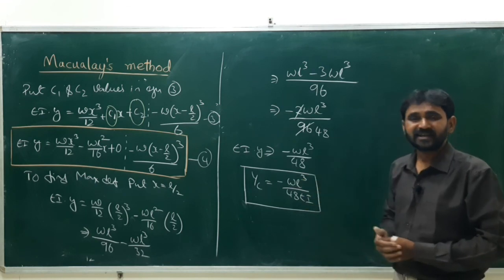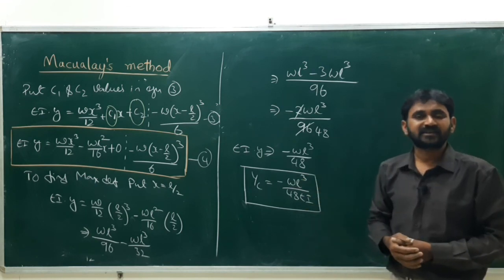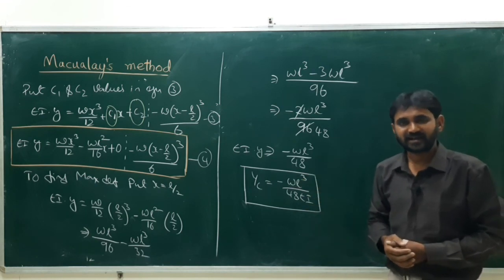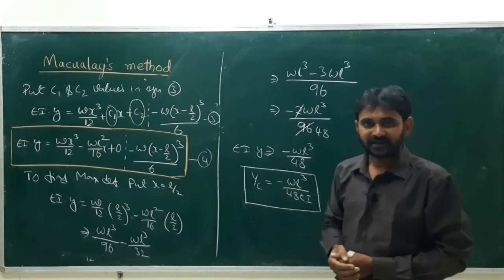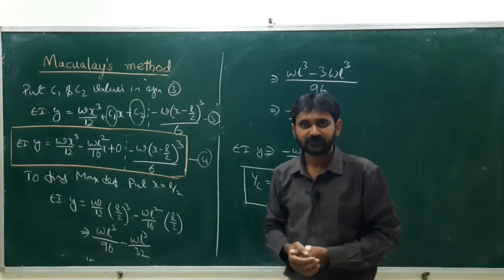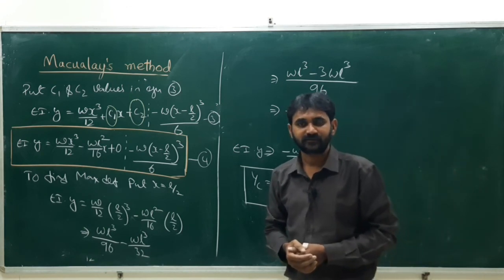The minus sign indicates the deflection actually acts in the downward direction. This is the maximum deflection of a simply supported beam with a central point load, equal to −WL³ / (48EI). Thank you.